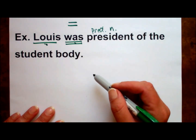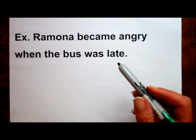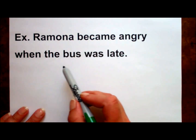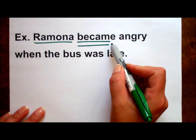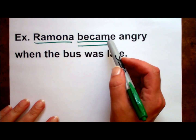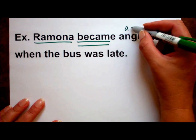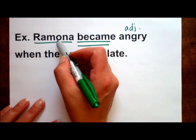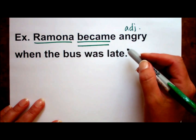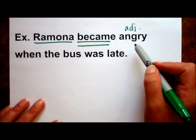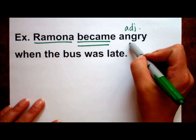Now let's talk about predicate adjectives. Predicate adjectives are simply adjectives that follow linking verbs and describe the subject. Let's look at an example: Ramona became angry when the bus was late. The subject is Ramona and the linking verb is became. We have to look further in the predicate to figure out what it is that Ramona became — there it is: angry. Angry is clearly an adjective that describes Ramona. Which Ramona? The angry Ramona. But because it's located in the predicate, we call it a predicate adjective. Remember that an adjective almost always appears before the word it modifies; the only exception to that rule is in the case of the predicate adjective.